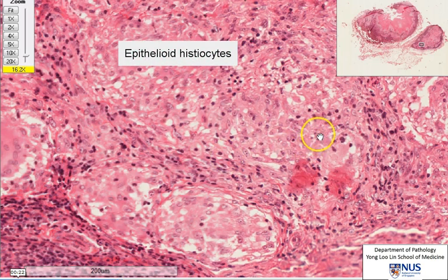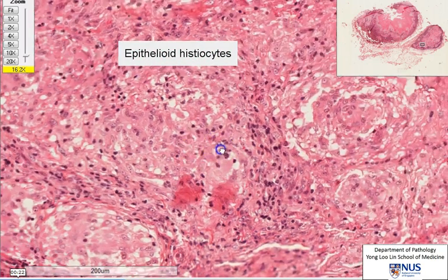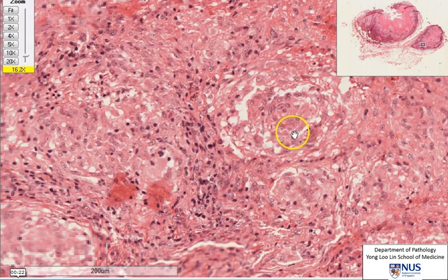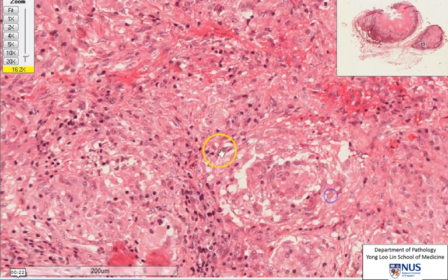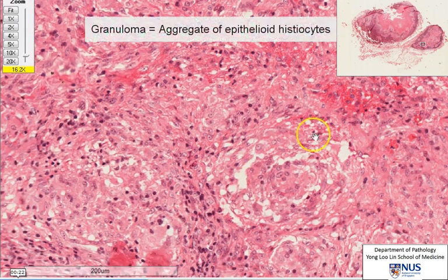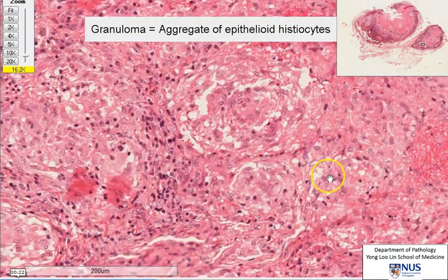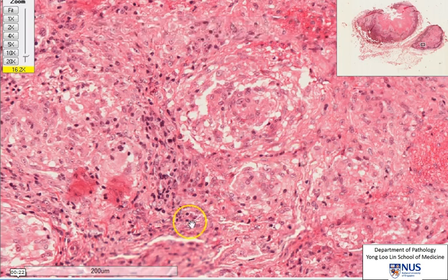We call them epithelioid because they are large and they have quite abundant eosinophilic cytoplasm and they do resemble epithelial cells. An aggregate of epithelioid histiocytes is known as a granuloma. We do not have to have any giant cells or even lymphocytes — as long as you have an aggregate of epithelioid histiocytes, that is a granuloma.